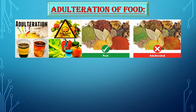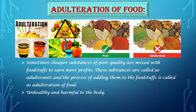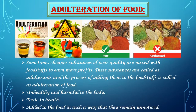Now let us understand about adulteration of food. In order to earn more profits, sometimes cheaper substances of poor quality are mixed with foodstuffs. These substances are called adulterants and the process of adding them to foodstuffs is called adulteration of food. Adulterated food is unhealthy and harmful to the body and hence unfit for consumption. Adulterants may even be toxic, meaning harmful, to health and they are added to food in such a way that they remain unnoticed.